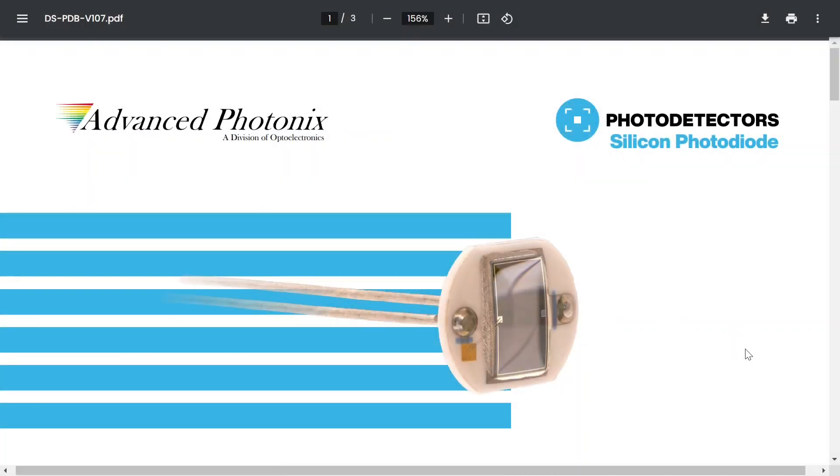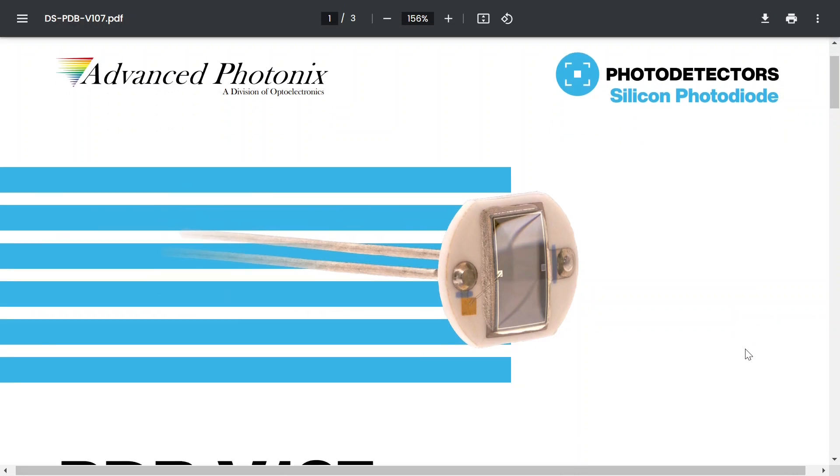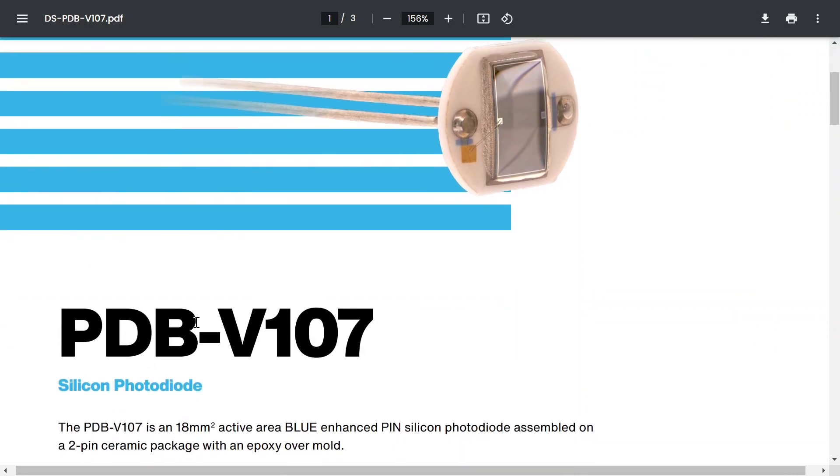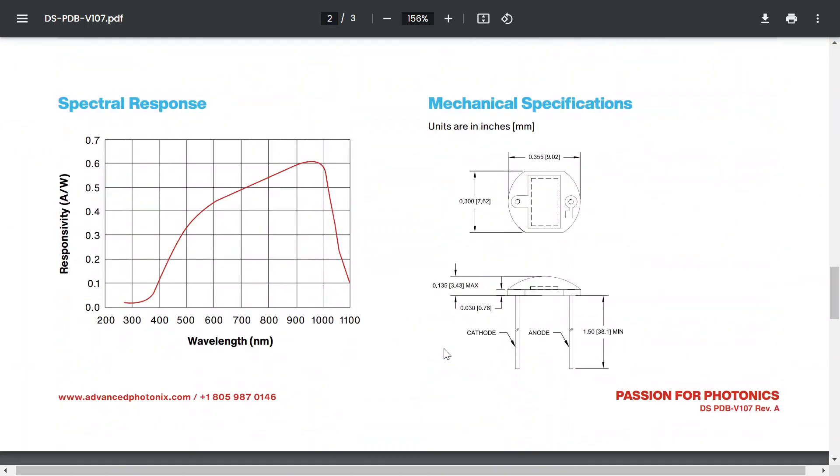This is the datasheet for the photodiode we'll be using today. It has a part number of PDB-V107. We spoke about color. And you can see that this particular sensor will respond to a wide variety of colors, with red being somewhere around here between 600 and 700.